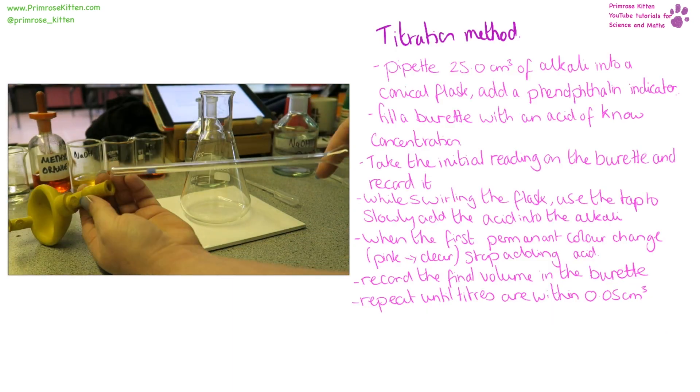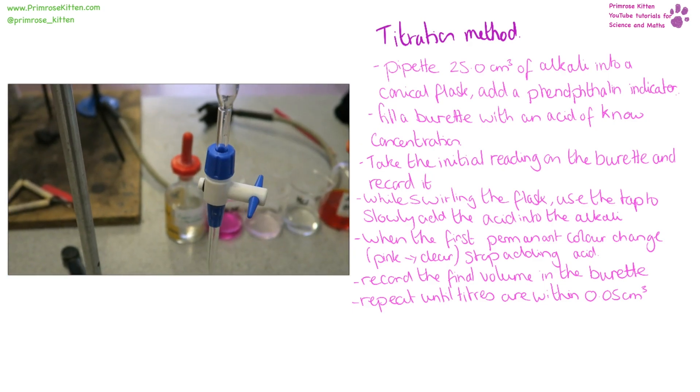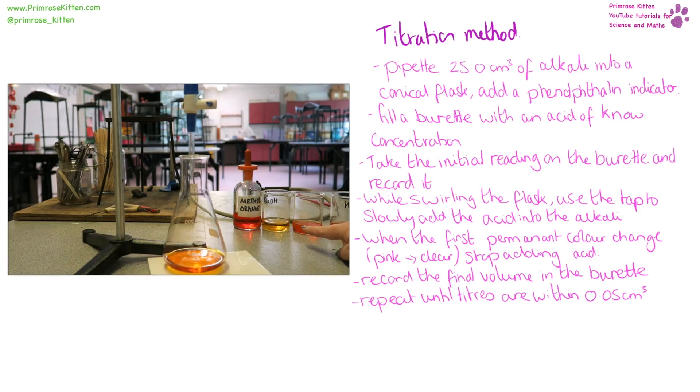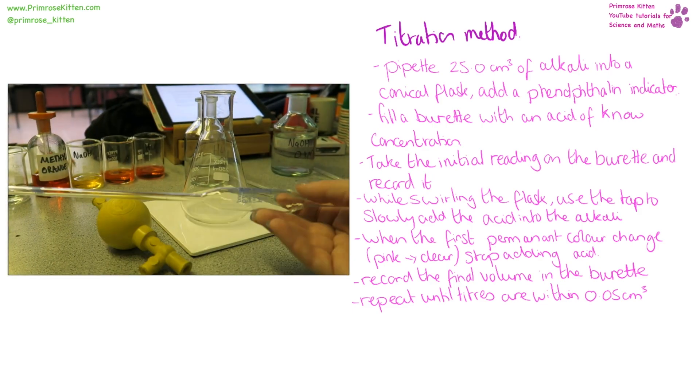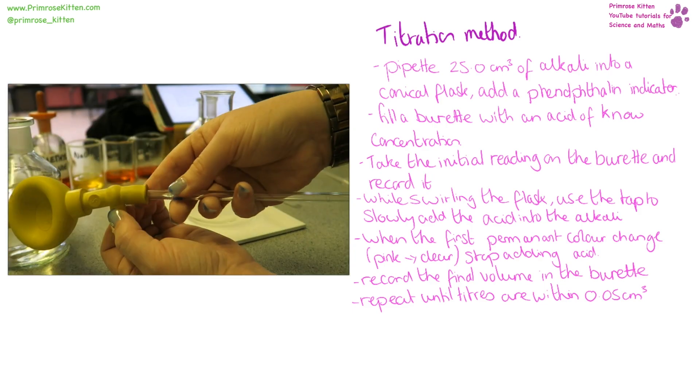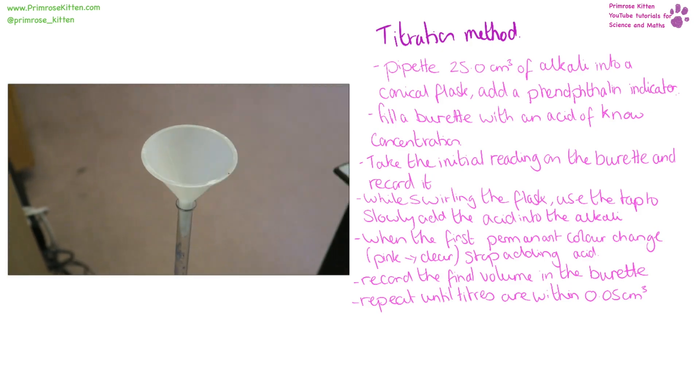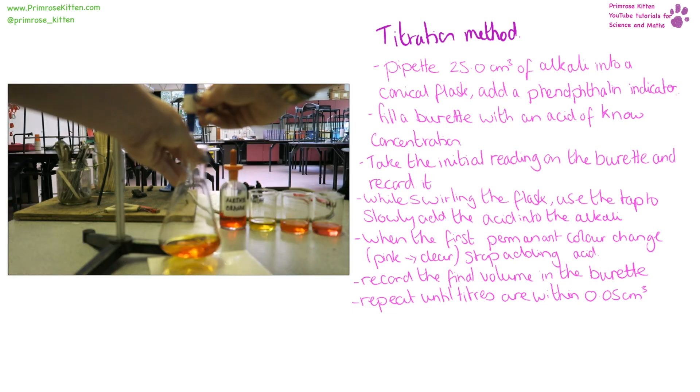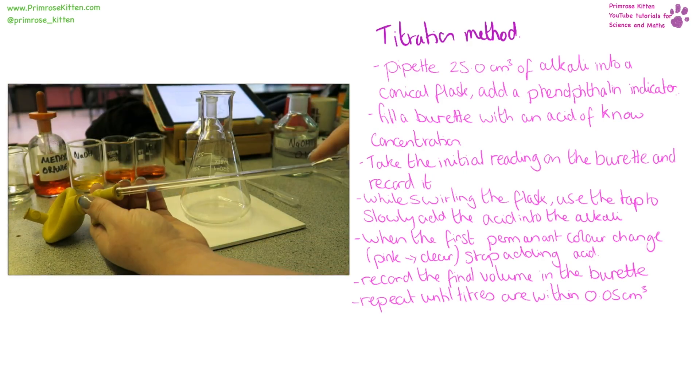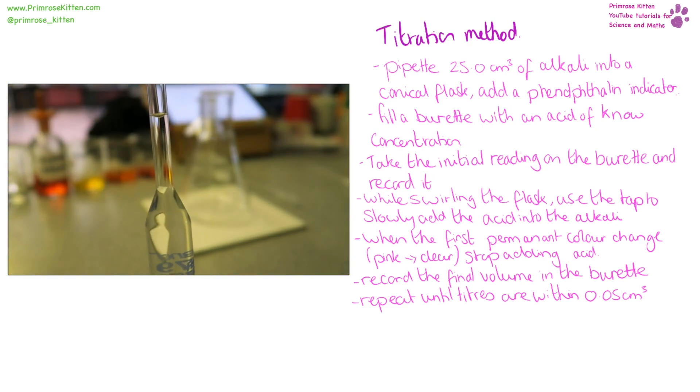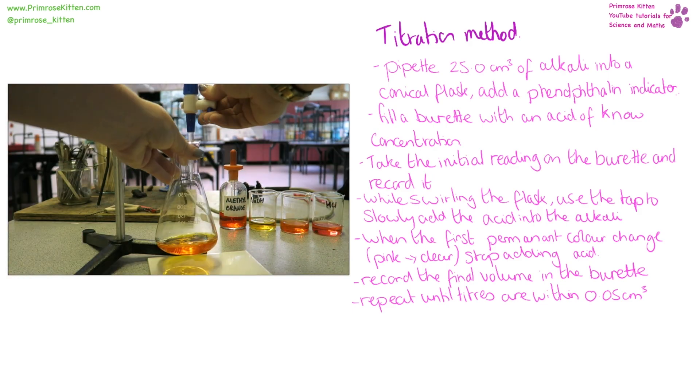When you are carrying out titration, you need to use a pipette to put 25 cm cubed from alkaline to a conical flask. Add an indicator, whether that's phenolphthalein or methyl orange. Fill the burette with the acid of a known concentration. Take the initial reading on the burette and record it. And then while swirling, use the tap to slowly add the acid into the alkali. When you can see that first permanent colour change, and with phenolphthalein it's going to be pink to clear, you can stop adding acid. Record the final volume on the burette. And repeat until you get titers that are within 0.05 cm cubed of each other.